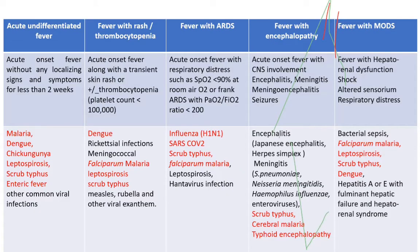In the common scenario of acute undifferentiated fever, common causes are malaria, dengue, chikungunya, leptospirosis, scrub typhus, enteric fever, and other common viral infections. Fever with rash and thrombocytopenia — the rash may be transient or associated with thrombocytopenia — platelet count less than 1 lakh — with causes including dengue, rickettsial infection, meningococcal infections, falciparum malaria.